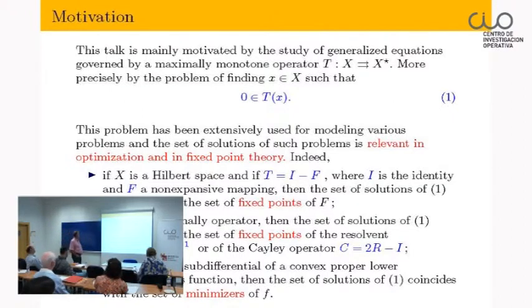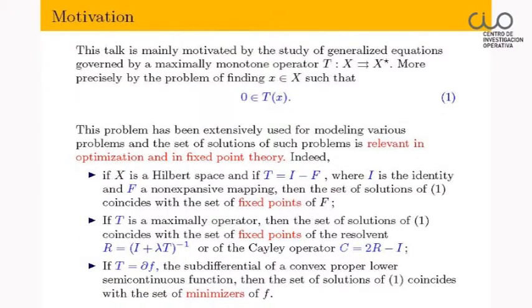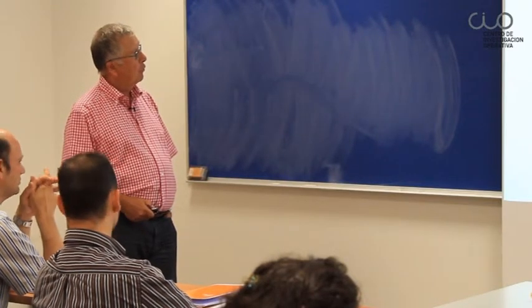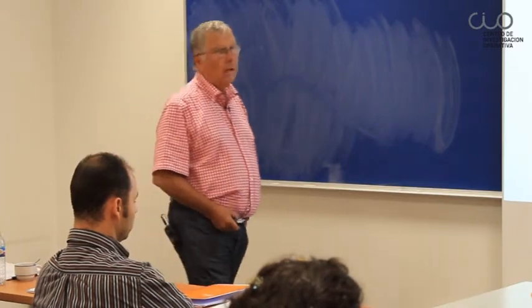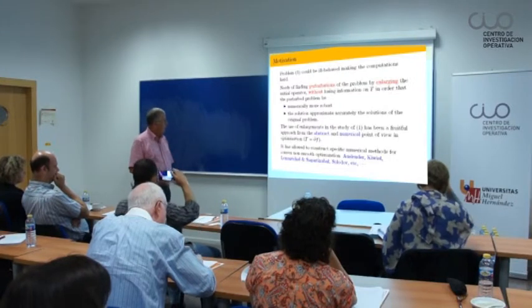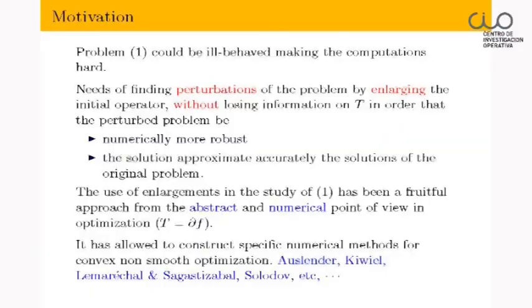Let me give three examples. If the operator T is the identity minus f, where f is a non-expansive mapping, then the set of solutions coincides with the set of fixed points of f. When T is a maximally monotone operator, the set of solutions coincides with the set of fixed points of the resolvent of T, or the KLA operator. And when T is a subdifferential of a lower semi-continuous function, the set of solutions coincides with the set of minimizers of f.